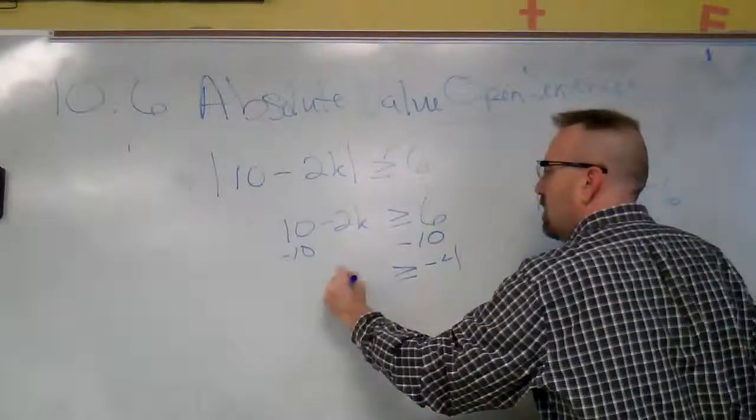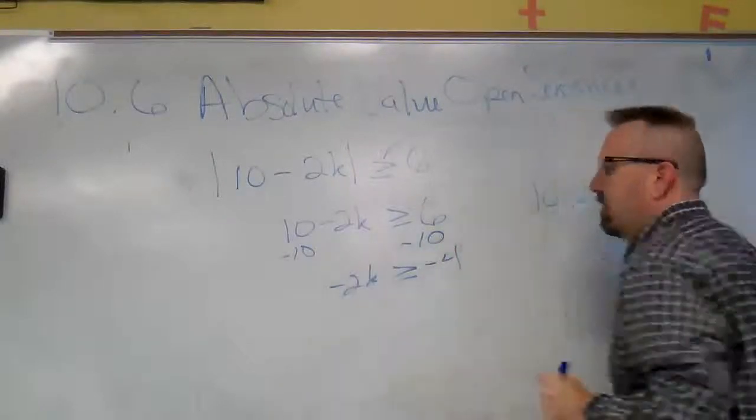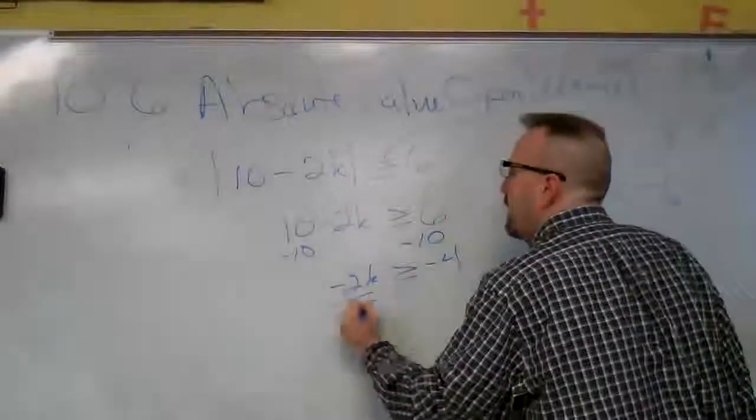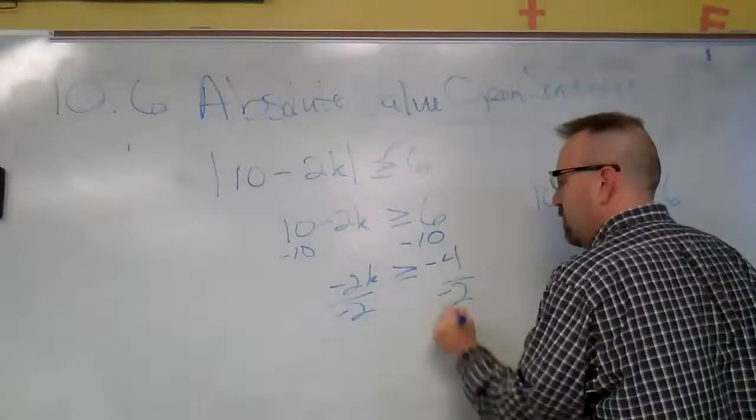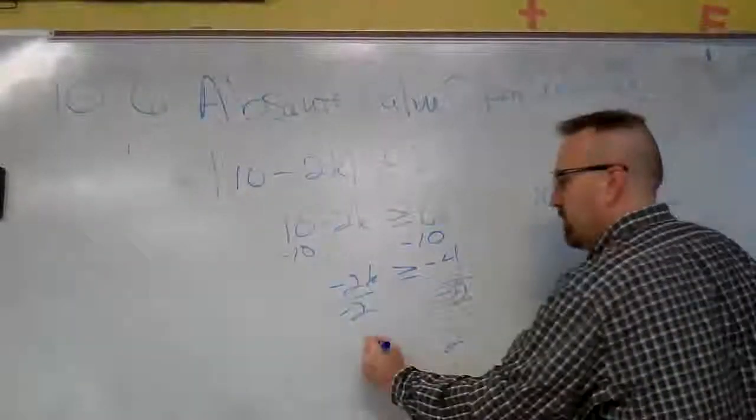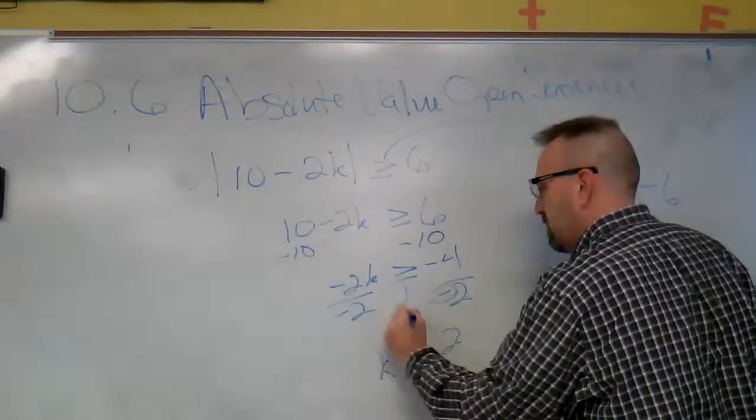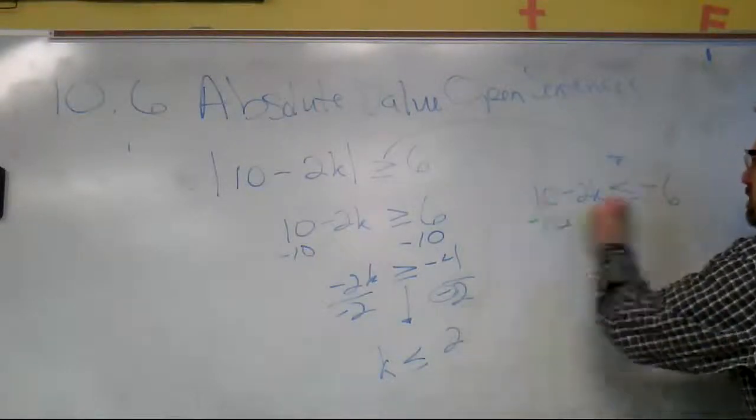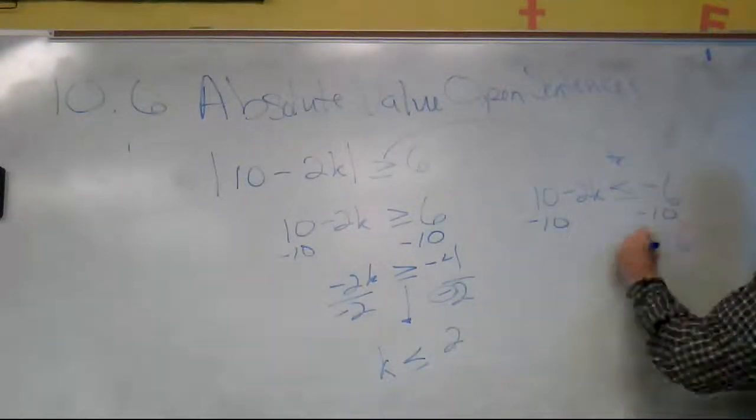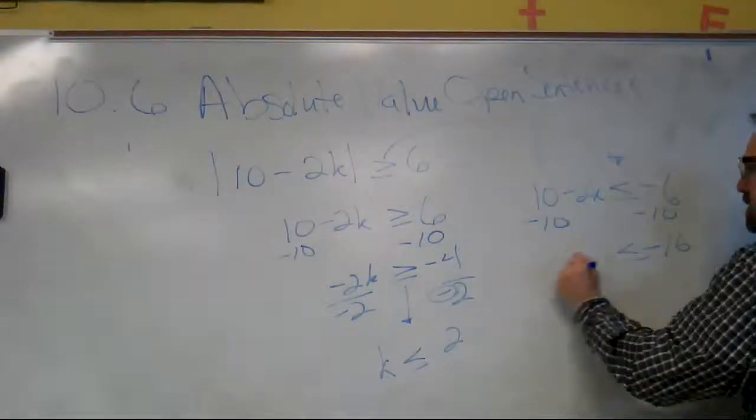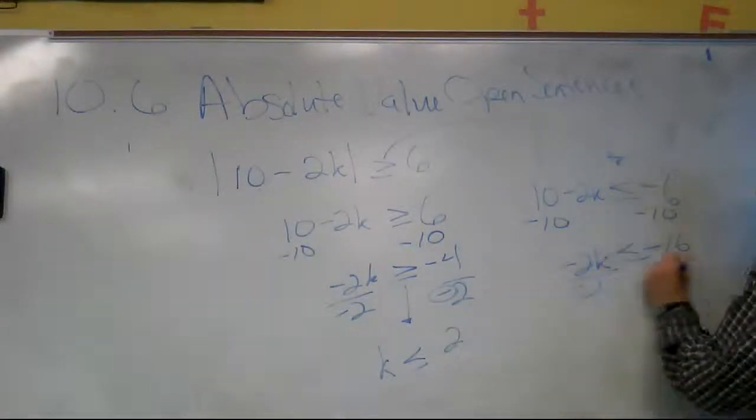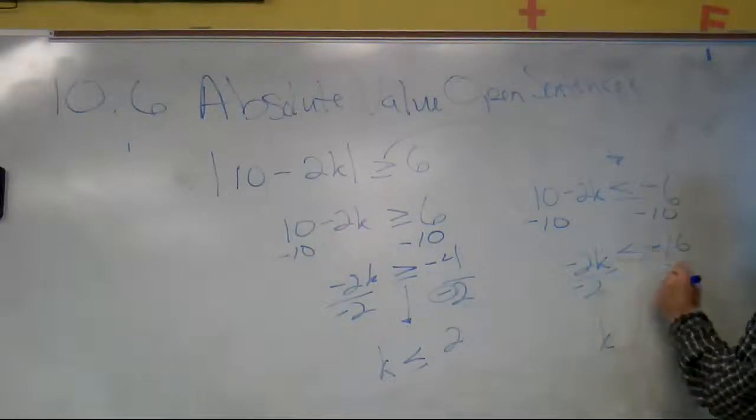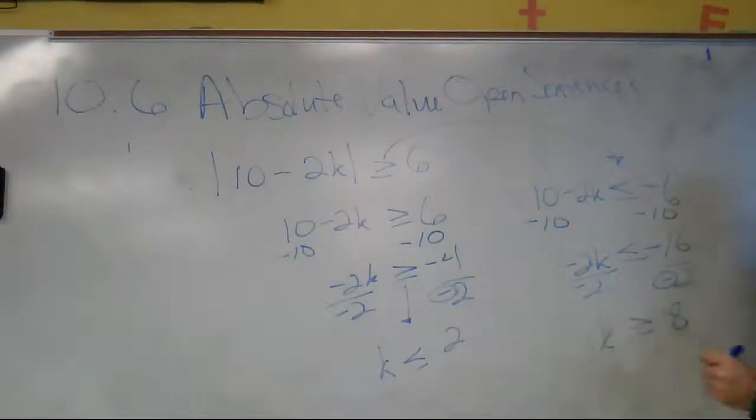Negative 10, negative 4. We divide by negative 2, which gives us 2. But we divide by a negative, so what do we have to do? Flip the sign. This one has a flip in it, so subtract 10: negative 16. Divide by negative 2, we get positive 8. But we divide by that negative, so again we flip our sign.